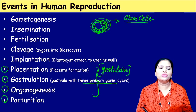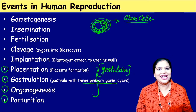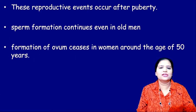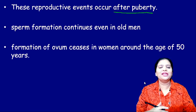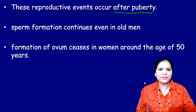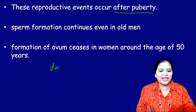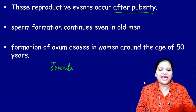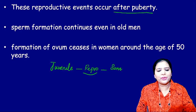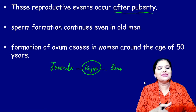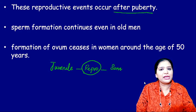These reproductive events occur after puberty. Puberty means reaching the adolescence period. In our earlier chapter, we studied the stages of the life cycle: the first phase is the juvenile phase, the second is the reproductive phase, and the third is the senescence phase. These events occur only in the reproductive phase — not during childhood. The reproductive events occur after puberty, starting around 13 years of age.